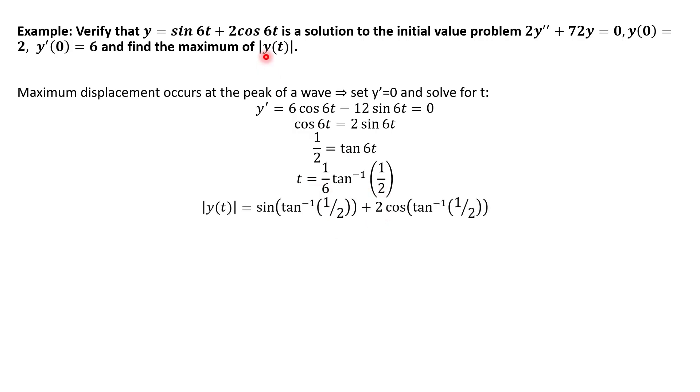But we actually want what happens when we plug in this t value into y to get the actual displacement. This is a time when it occurs. So we want the position. So we plug it back into our y function, do a little bit of simplifying, and we get that this is square root of 5. So as a decimal, you can plug that into the calculator if you want. But that's the maximum displacement of our mass.